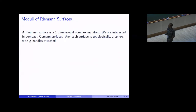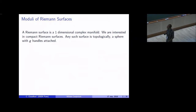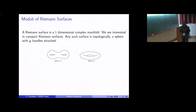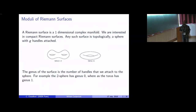I'll be interested in compact Riemann surfaces, which are just one-dimensional compact complex manifolds. They are topological manifolds, and any topological two-manifold, if it's compact, can be obtained from the sphere by attaching some handles. The number of handles that we attach is called the genus of the surface. For instance, I have drawn two surfaces: one is of genus two, the other is of genus one — the genus one surface is, of course, a torus.